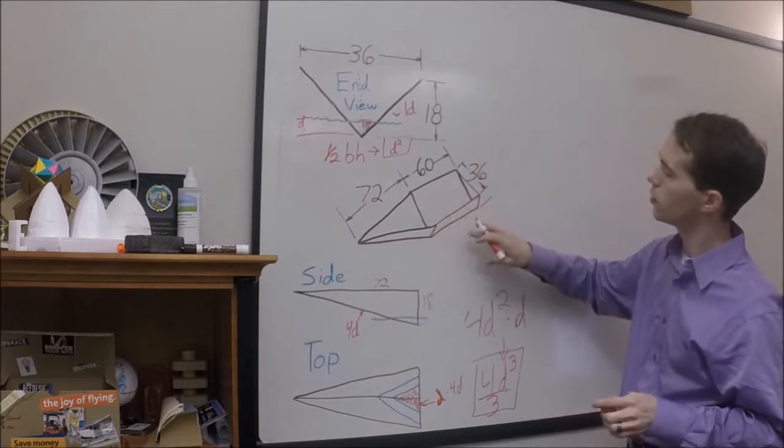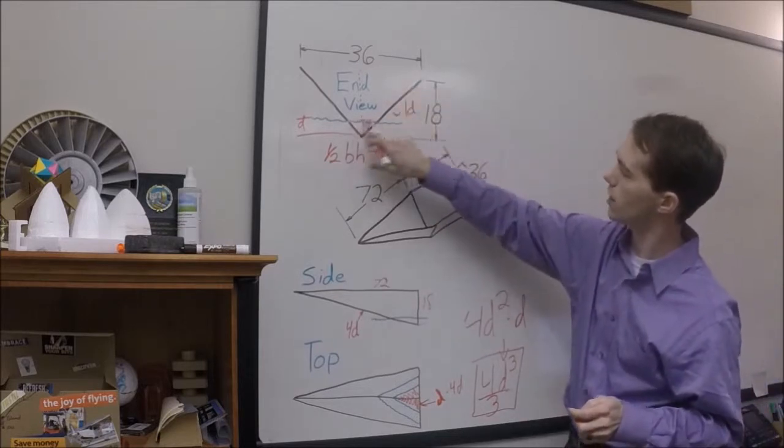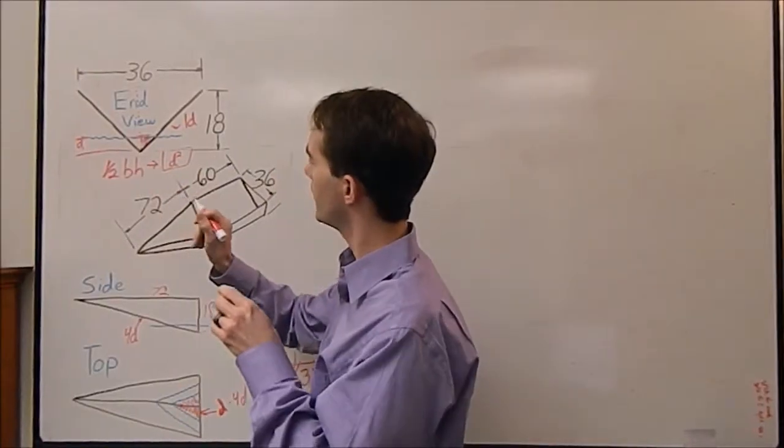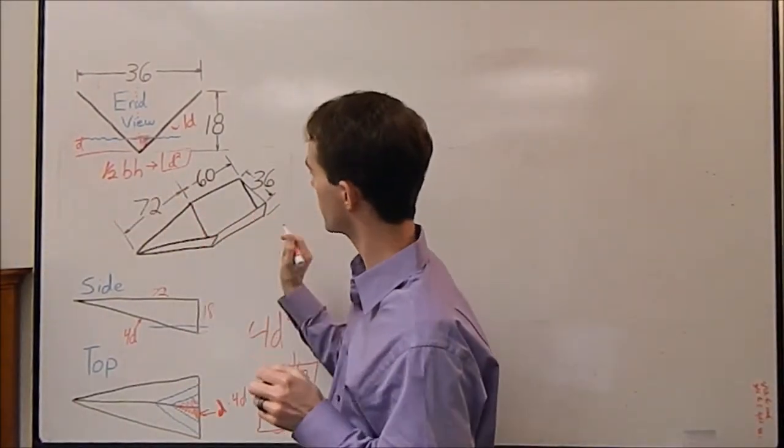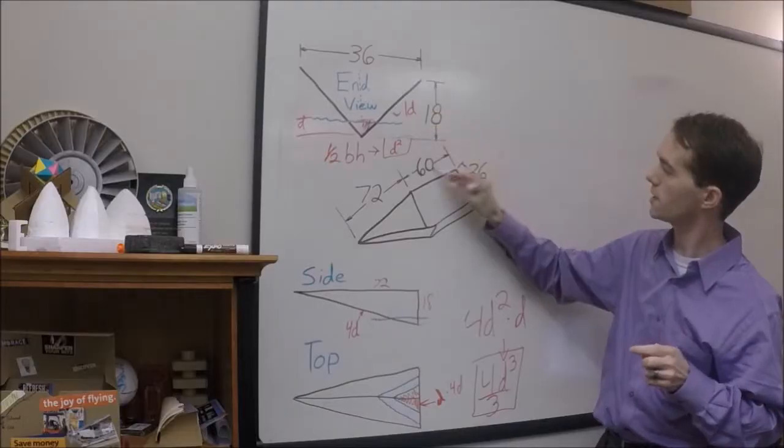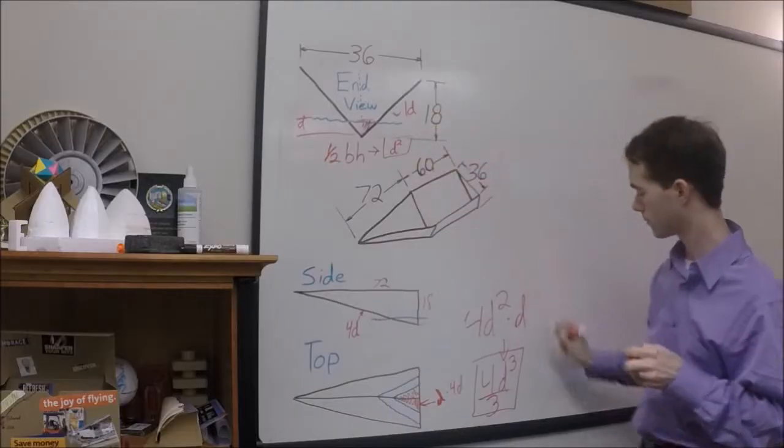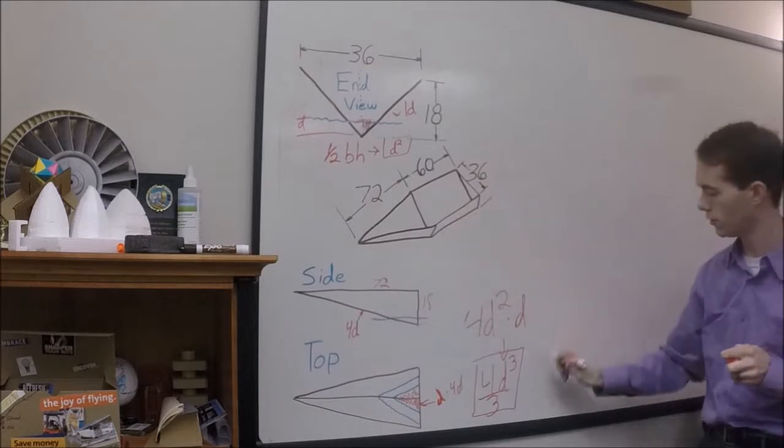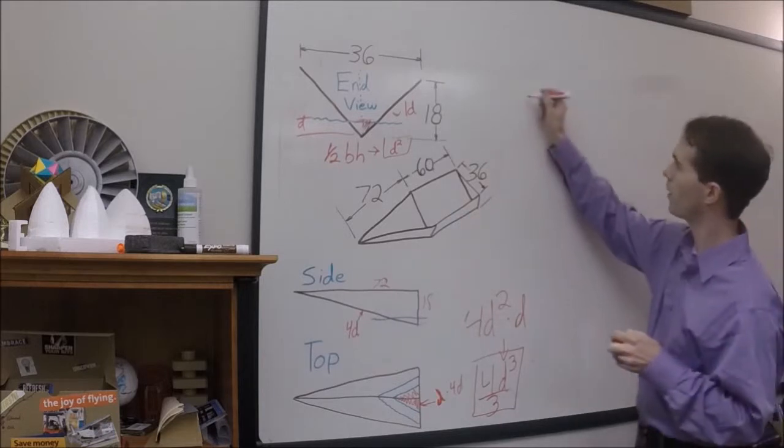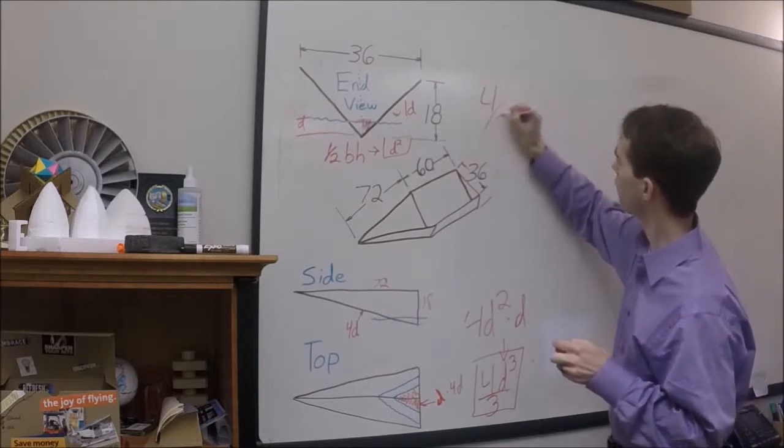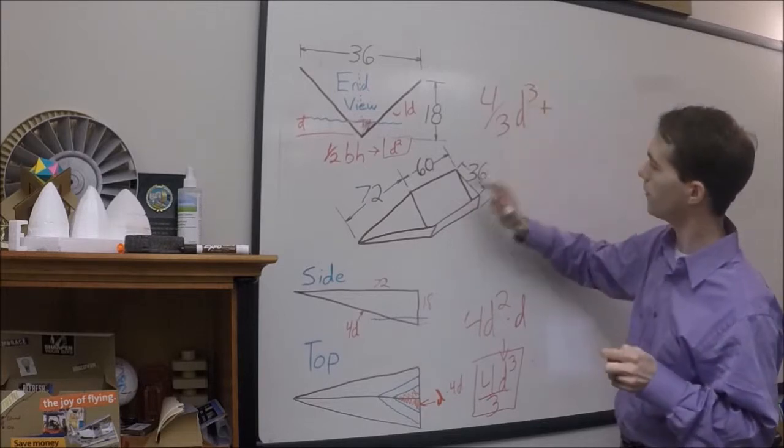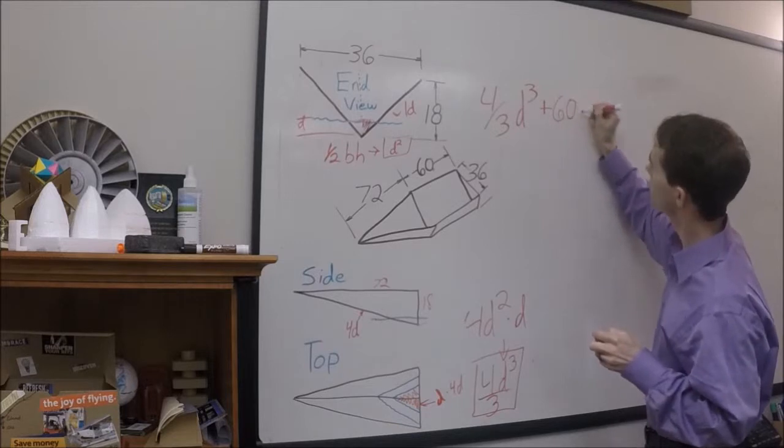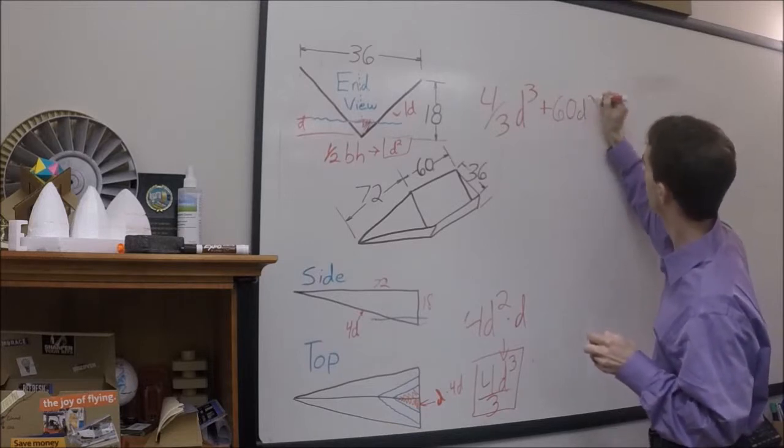In this cockpit section here, we have this equation here, which is the area of this. But we need the volume of that prismatic shape that extends back into the cockpit section. So that there is simply 60 times d squared. So the entire equation for displacement, I'll write it up here, is 4 thirds d cubed plus the cockpit section, 60 d squared.